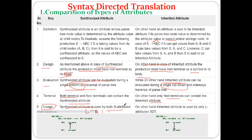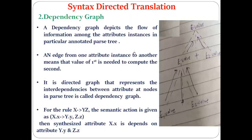Synthesized attributes are utilized by both S-attributed SDT and L-attributed SDT. We will discuss what S-attributed SDT and L-attributed SDT mean next. Inherited attributes are used by only the L-attributed SDT. Both terminals and non-terminals can contain synthesized attributes, but only non-terminals contain inherited attributes. As an example, E is considered a synthesized attribute as it is taking value from the child, while F is considered an inherited attribute because it is taking value from the parent.